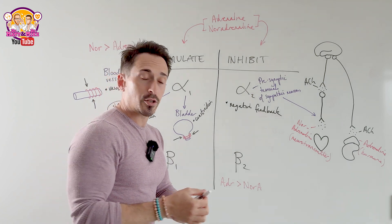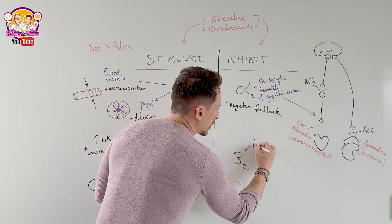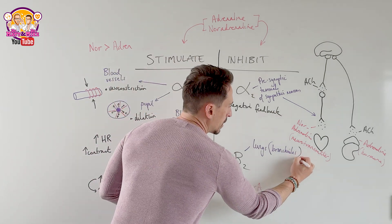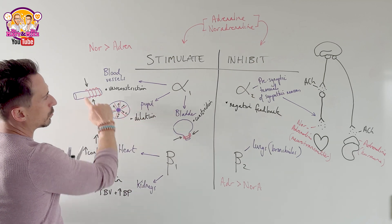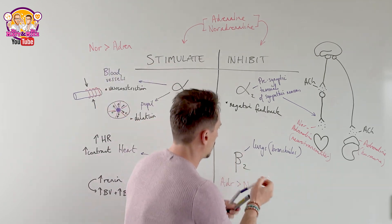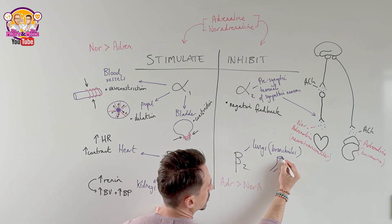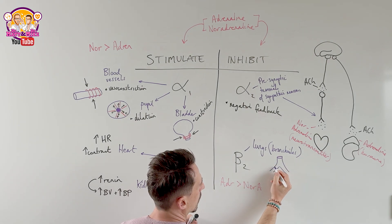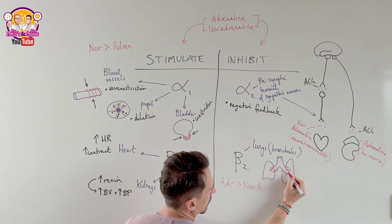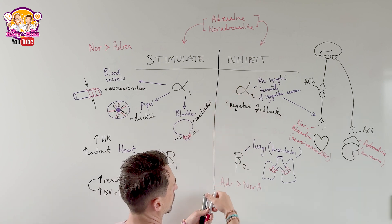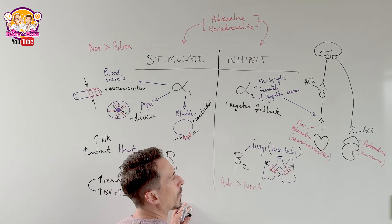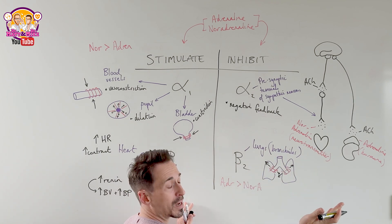Beta-2 — we have two lungs, left and right — is located at the bronchioles of the lungs. Think of beta-2 as opposing alpha-1 in terms of smooth muscle. The smooth muscles lining the bronchioles, when you throw adrenaline or noradrenaline at beta-2 receptors, are inhibited — they relax. This causes the airways to dilate and open up, allowing more oxygen in to feed the muscles so we can fight or run away.